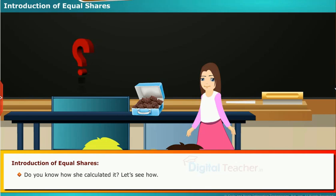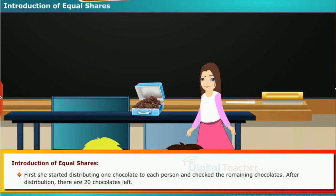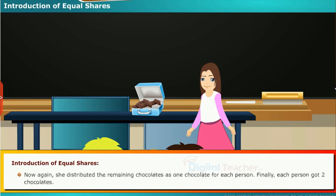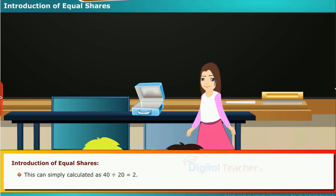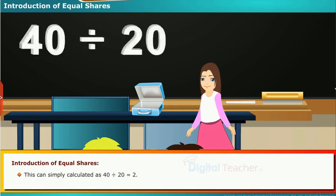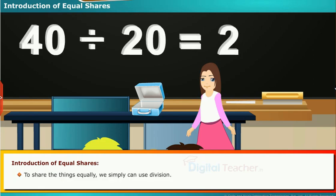First, she started distributing one chocolate to each person and checked the remaining chocolates. After distribution, there are 20 chocolates left. Now again, she distributed the remaining chocolates as one chocolate for each person. Finally, each person got two chocolates. This can simply be calculated as 40 divided by 20 equals 2. To share things equally, we can simply use division.